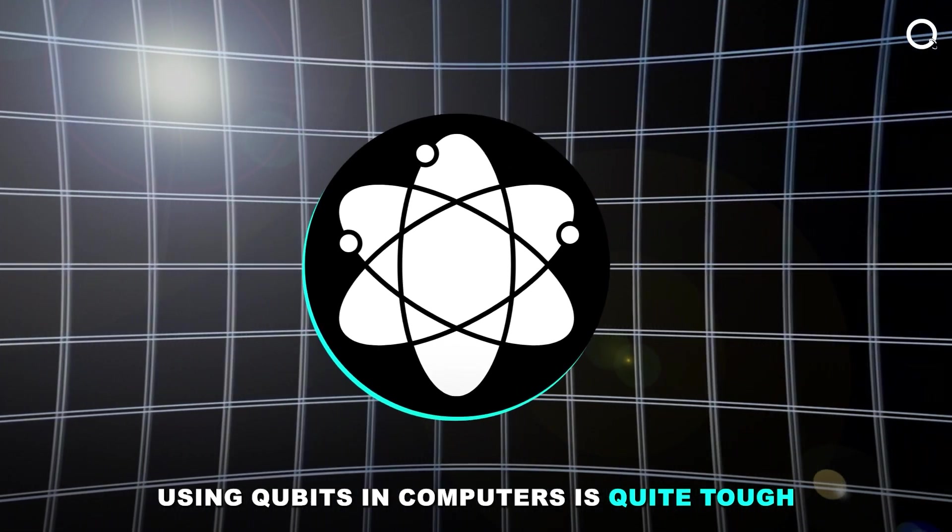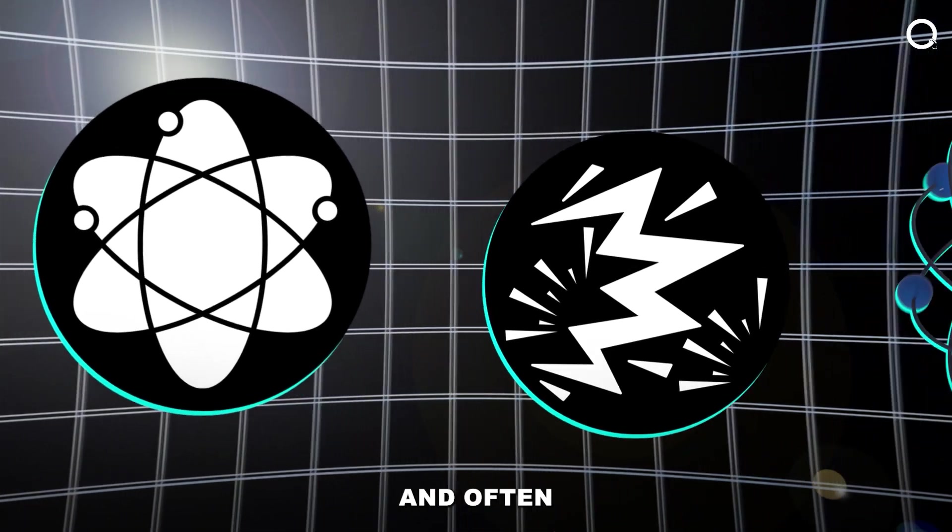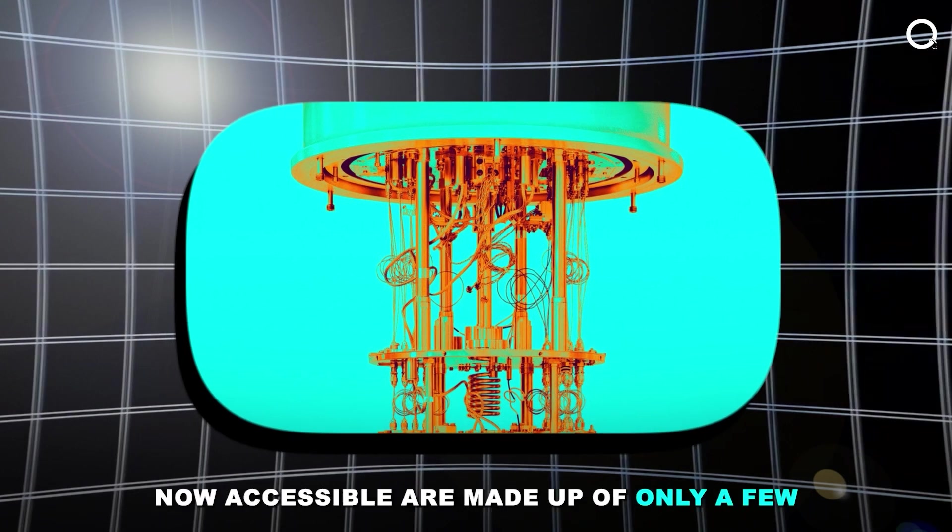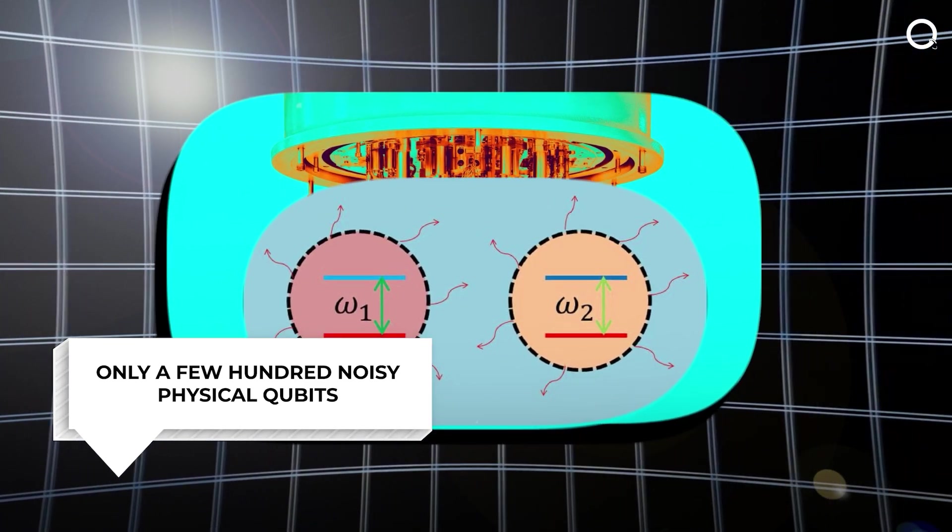Using qubits in computers is quite tough. Qubits are extremely sensitive to noise, and often only maintain their quantum state for very short periods of time. The largest quantum computers now accessible are made up of only a few hundred noisy physical qubits.